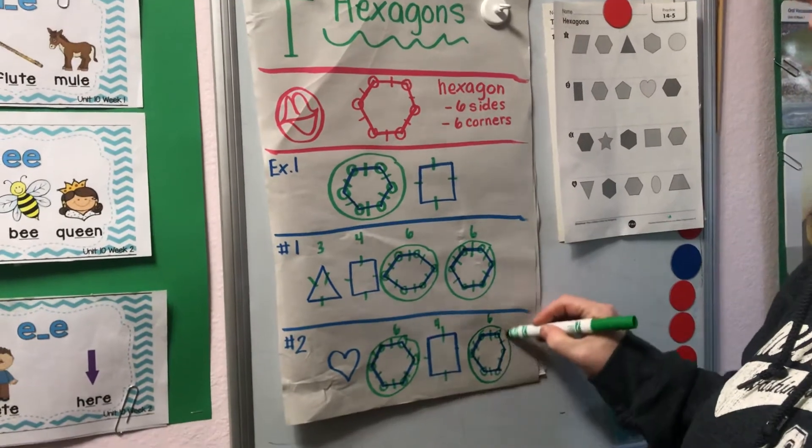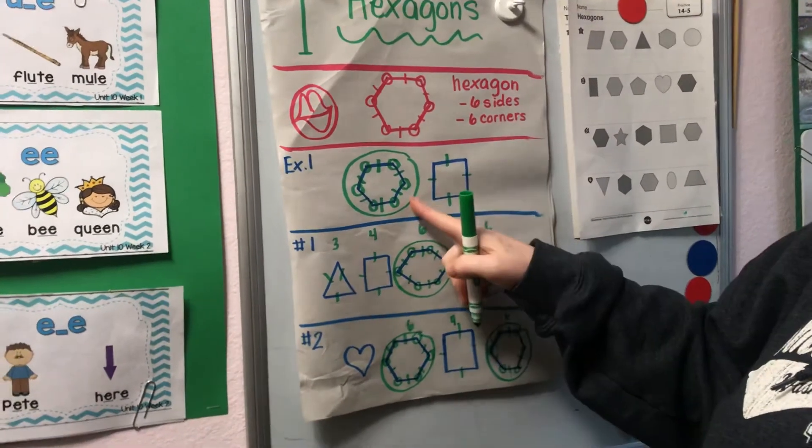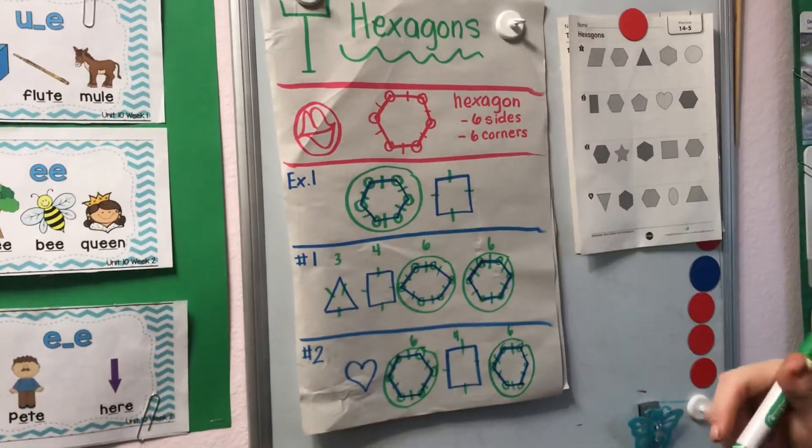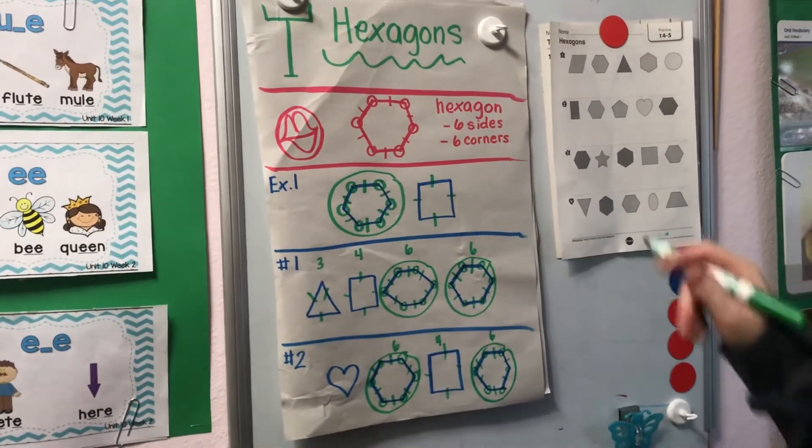So today we're talking about hexagons, and hexagons have six sides and six corners.